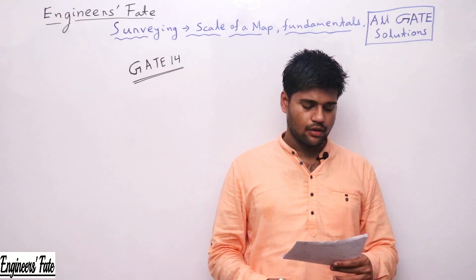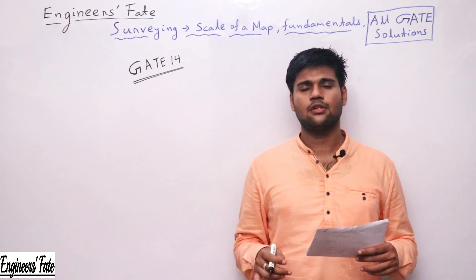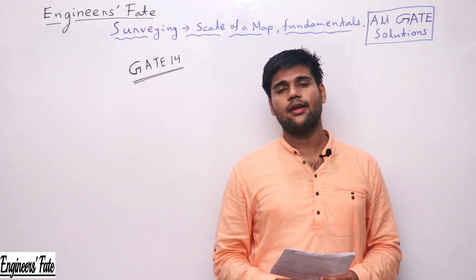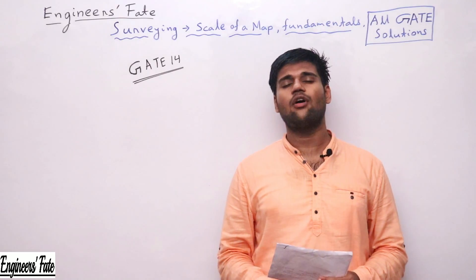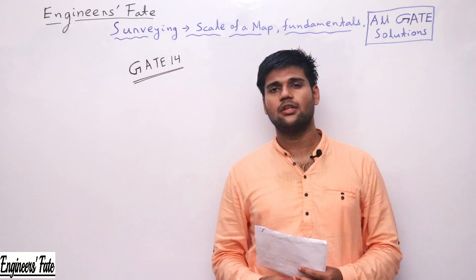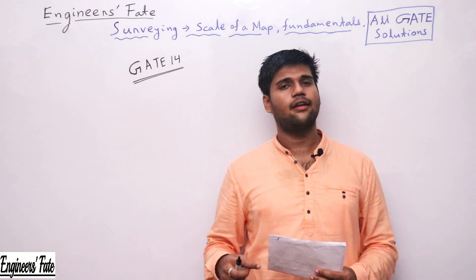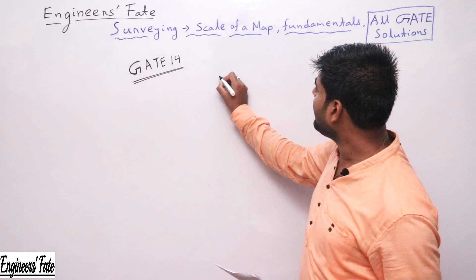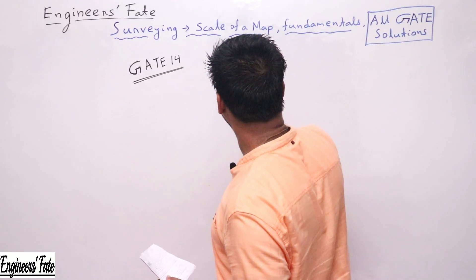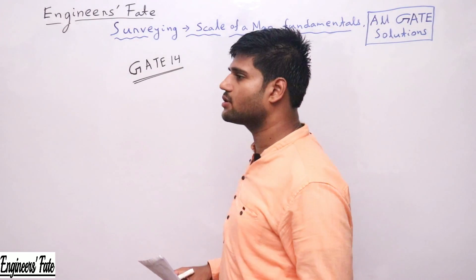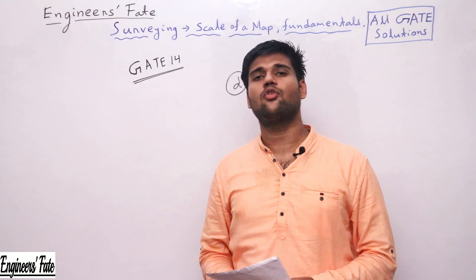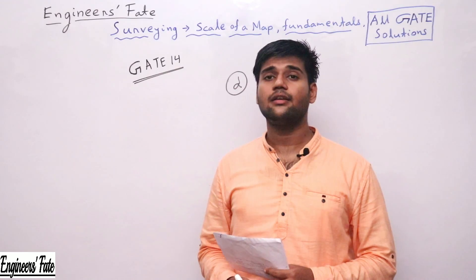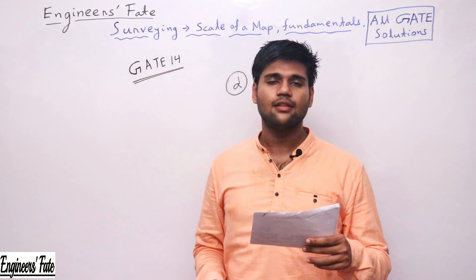The next question asked in GATE 2014: the survey carried out to delineate natural features. When natural features are mentioned, that means topographical survey. In topographical survey, we show natural features such as hills, rivers, and whatever the topography of the area. In engineering survey, we generally show railway works, construction of canals, road construction, etc. So when natural features like hills and rivers are mentioned, the answer is topographical survey — option D.